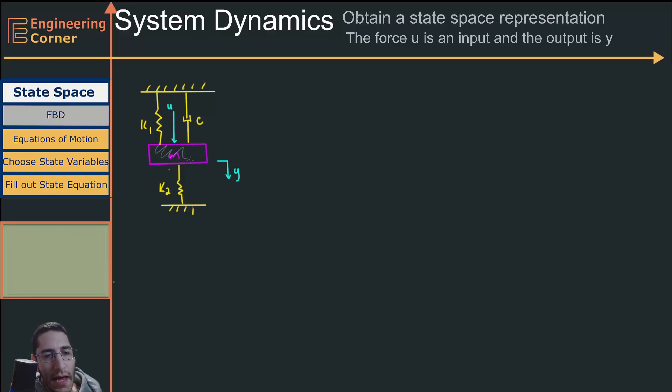This system contains a mass of m, it contains two springs connected to the mass with spring constants k1 and k2, it contains a damper force of c, and it contains an input force of u which is acting downward. We are also looking at our output y, which is the displacement that this mass moves.